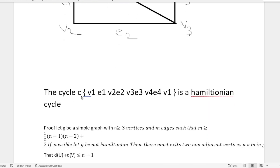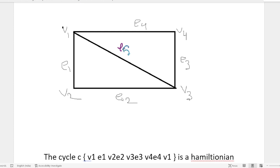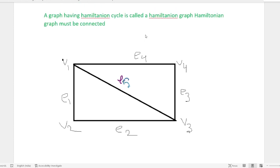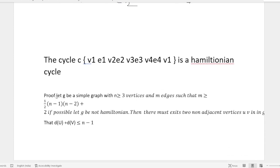The cycle c: v1 e1 v2 e2 v3 e3 v4 e4 v1 is a Hamiltonian cycle. Now for the proof.